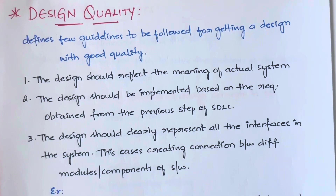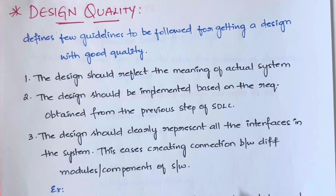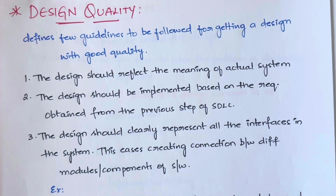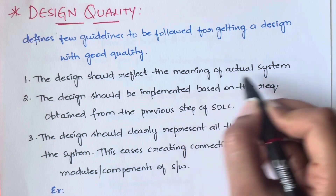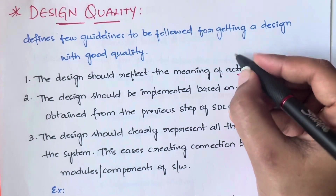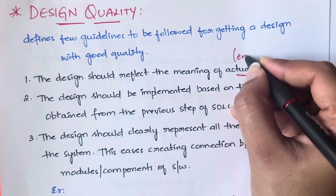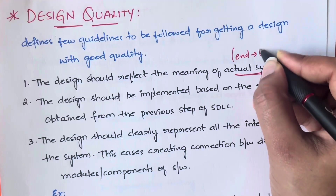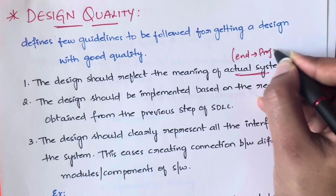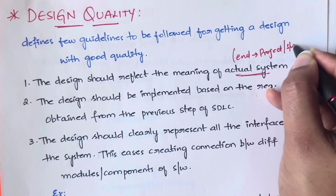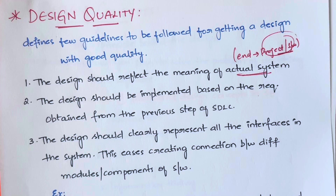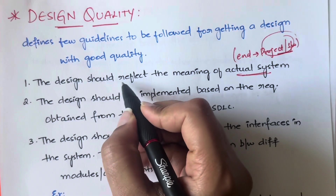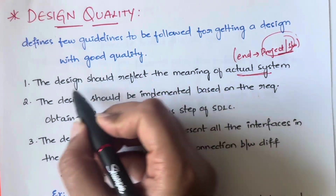Now let's see what those guidelines are. First: the design should reflect the meaning of the actual system. The actual system means, at the end, how do you want your project or your software to look like? That should be reflected in your design.